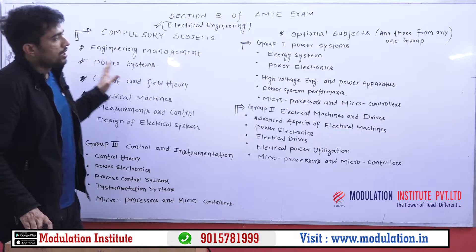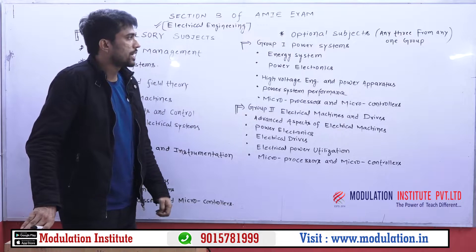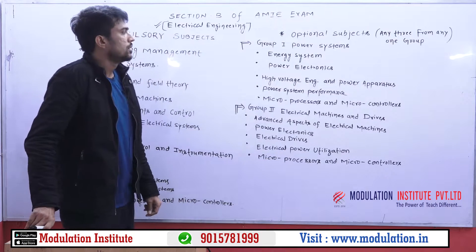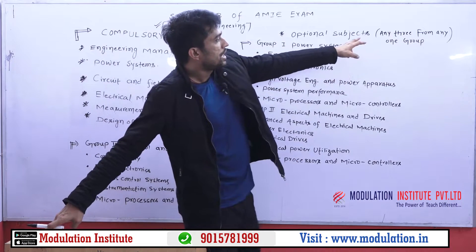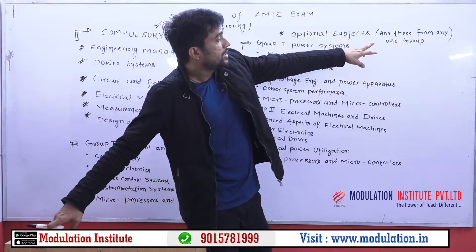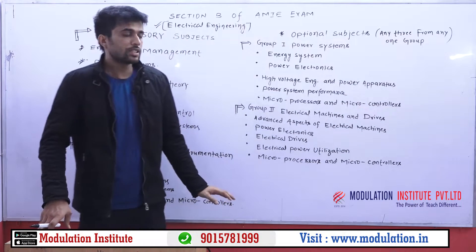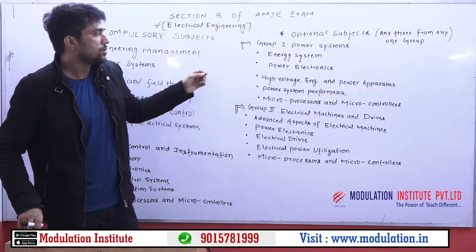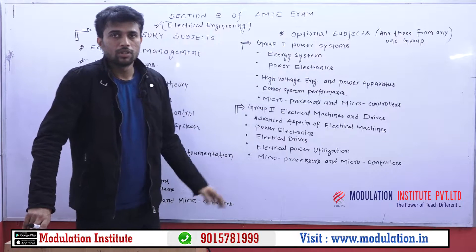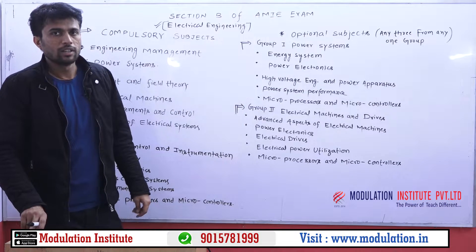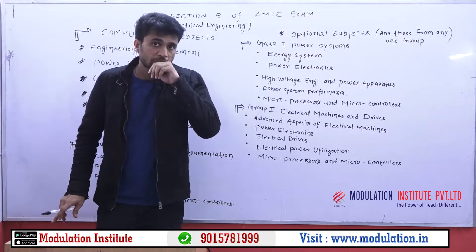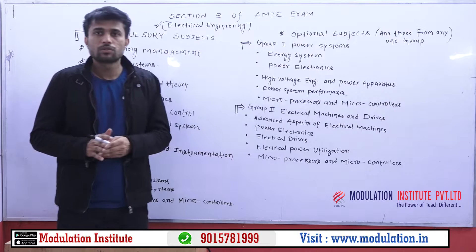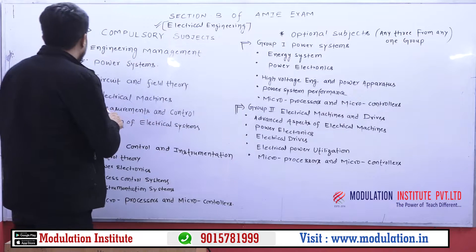Along with these six subjects, we are having optional subjects, and these are categorized into three groups: Group 1, Group 2, and Group 3. You have to choose any three subjects from any one group. So, I will now tell you how you can decide which group to choose so that it will be easy for you to score very good grades in your final exam.